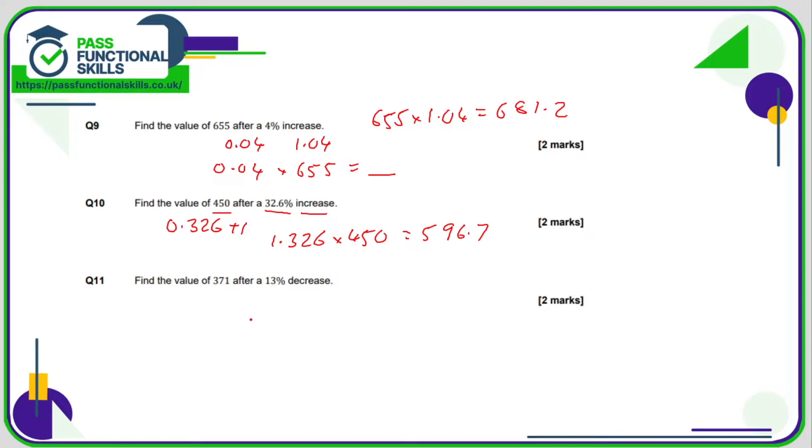For question number 11, for a 13% decrease, well, our multiplier for 13% is 0.13, but what we need to do is subtract this from 1. Perhaps another way of thinking about it, if something is reduced by 13%, you're therefore paying 87% of what it was before. So we need to work out what 87% of 371 is.